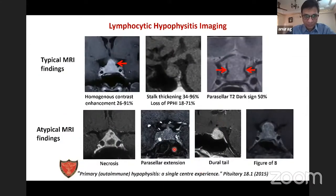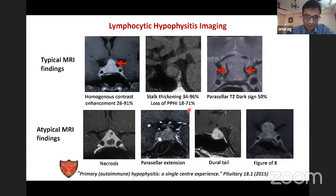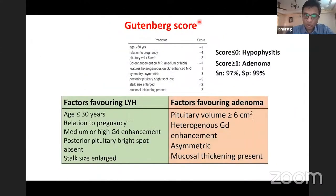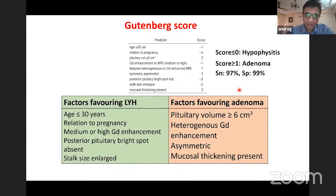In our experience of around 30 LYH patients, features include homogeneous enhancement and thick stalk. The T2 dark sign is very convincing and specific, but there may be unusual features like necrosis and parasellar extension. There may be a dural tail sign or figure-of-eight appearance overlapping with other pathologies. This is why we use the Gutenberg score, where certain features favor LYH (negative points) or adenoma (positive points). A negative score favors LYH. Hormonal involvement pattern also helps.